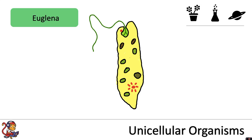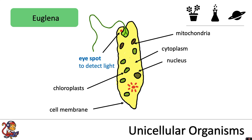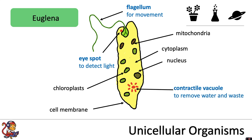Finally, the euglena also exists as a unicellular organism. It has mitochondria, cytoplasm, a nucleus, cell membrane and chloroplasts. In addition it also has an eye spot to detect light, a flagellum for movement and a contractile vacuole that removes water and waste.